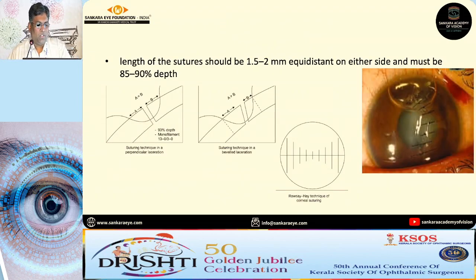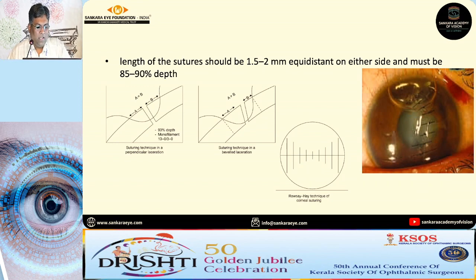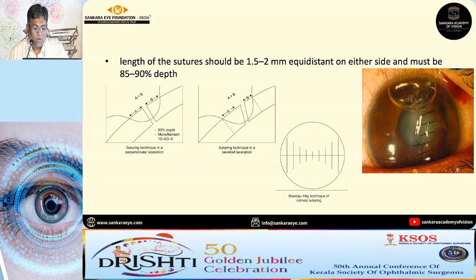The length of sutures should be around 1.5 to 2 millimeter bites on either side and must be around 90% depth. For a perpendicular laceration, entry and exit should be the same on either side. If it is beveled, the length will be slightly altered based on the amount of beveling. We have to follow the Roovsay-He technique of suturing where peripheral sutures are longer and tighter, and as you approach the central visual axis, they become more superficial and smaller.